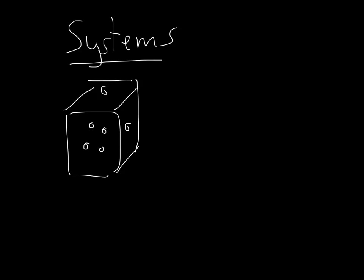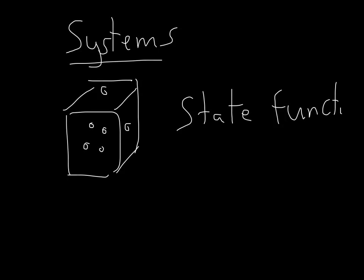What we want is to be able to describe these systems. We have a gas and we ask ourselves, how can I describe this gas with as little information as possible so that if I know these quantities, I know everything about the gas? Here comes the concept of something called a state function. A state function is a quantity that tells us how the system is right now. For example, the temperature of the gas tells us something about the gas right now. But the work that I do on a gas doesn't tell us anything about the system right now, because the final state depends entirely on the initial conditions.